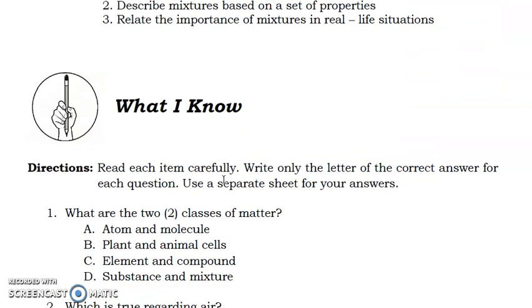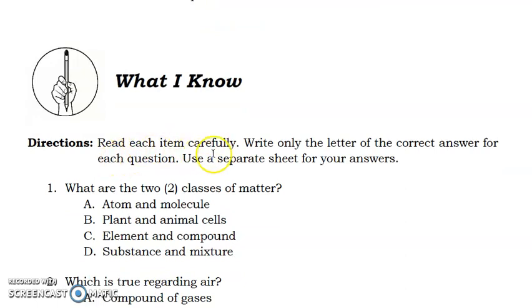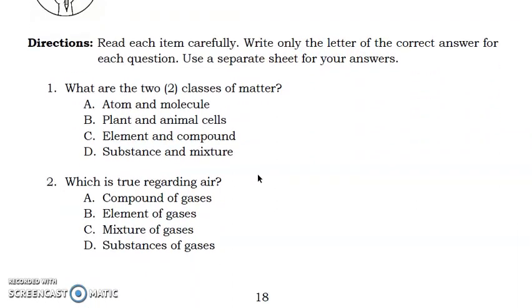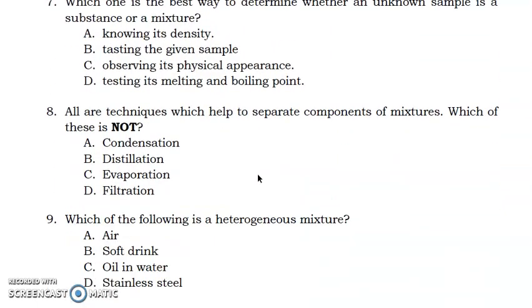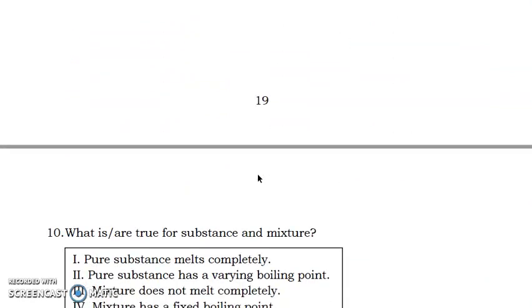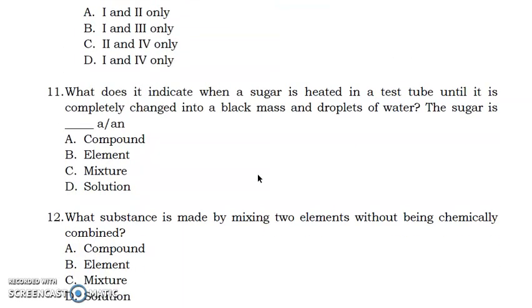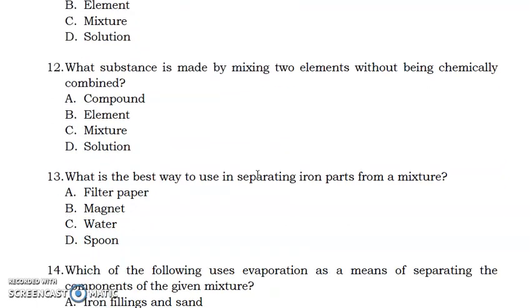Anyway, let's proceed with the What I Know part. So before you begin in reading the lesson about mixtures, you must answer first the What I Know part. So again, can you prepare your papers and pen, write down your name, your grade and section, the subject, the module number, and the lesson number. Then, the direction is, read each item carefully, write only the letter of the correct answer for each question. So we have here 15 items, which are all multiple choice.